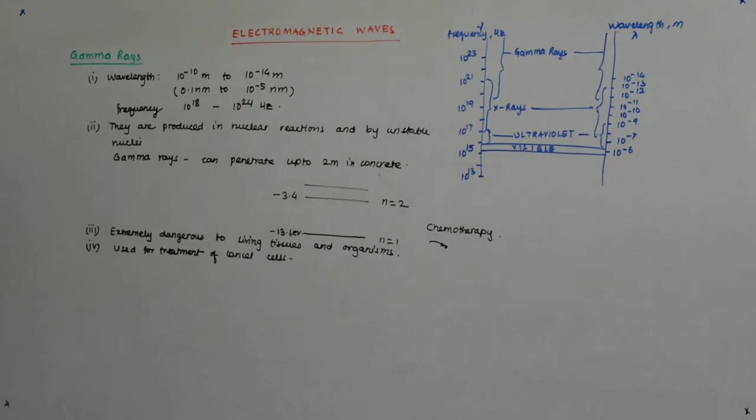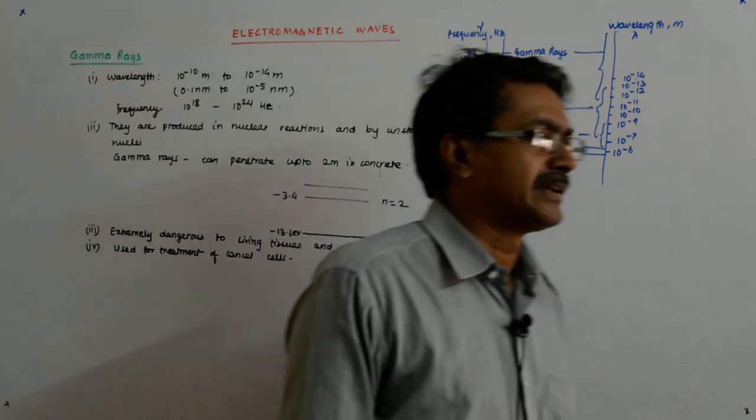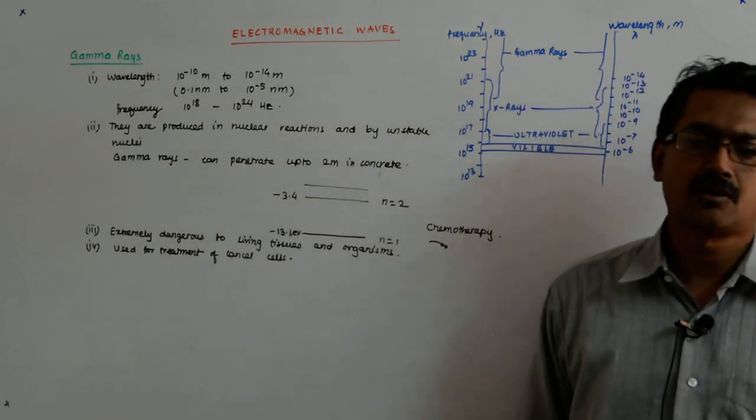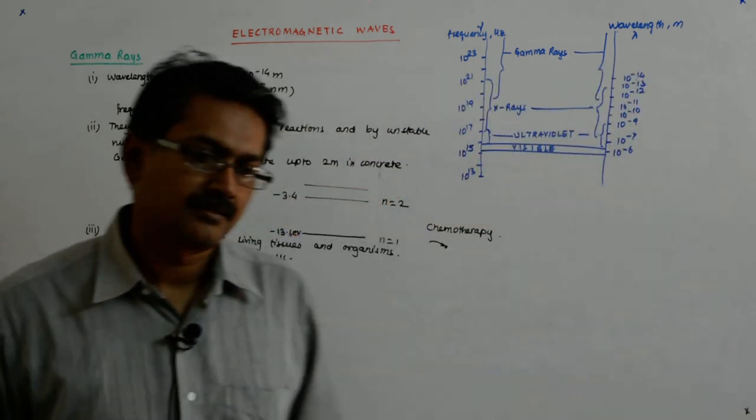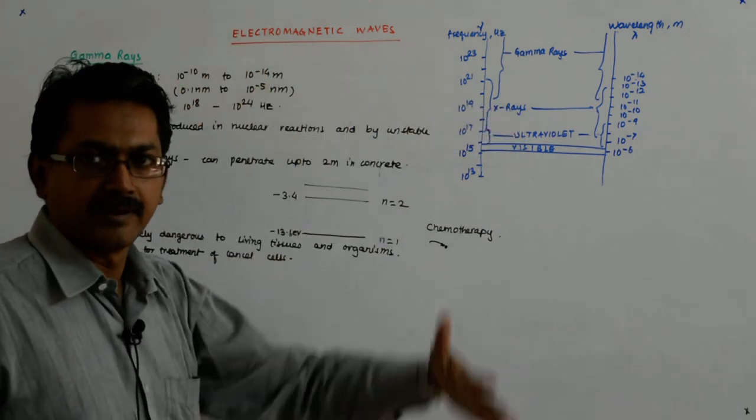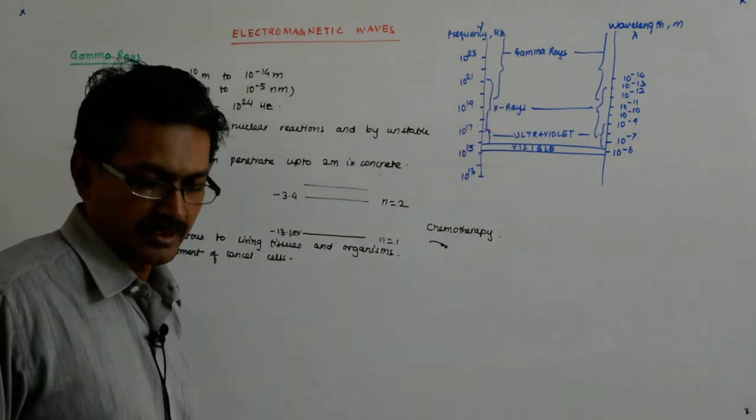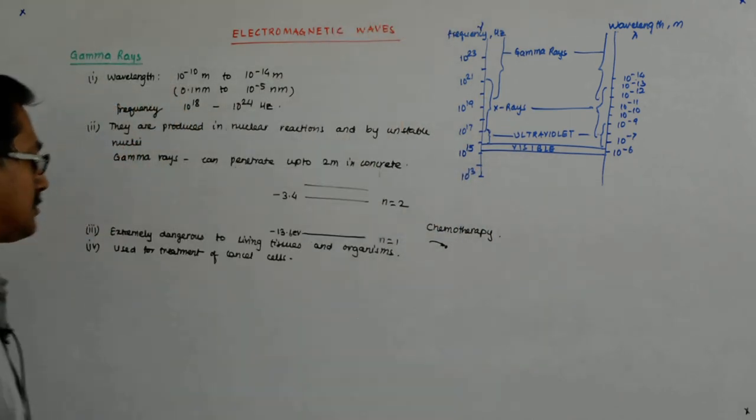And as we have already discussed that there are overlaps. And it actually depends on how you produce it or how you detect it. And there is no sharp boundary that says yes till here it was UV and suddenly it has become x-rays. But the danger starts going up as you go up, the danger starts becoming more as you go up.